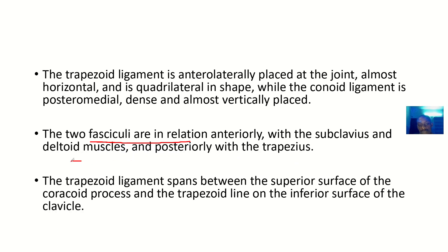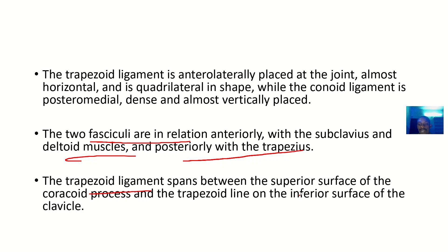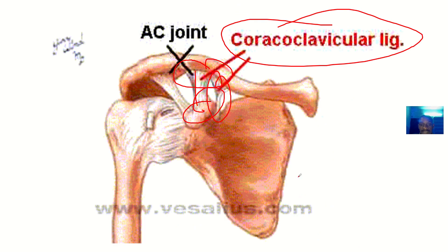The two fascicles are related anteriorly with the subclavius and deltoid muscles, and posteriorly with the trapezius. The trapezoid ligament spans between the superior surface of the coracoid process and the trapezoid line on the inferior surface of the clavicle. Both ligaments insert inferiorly to the clavicle, running from the coracoid process to under the clavicle.